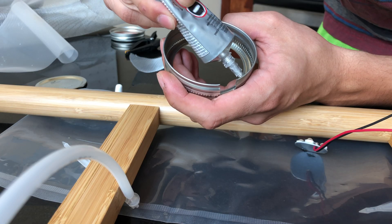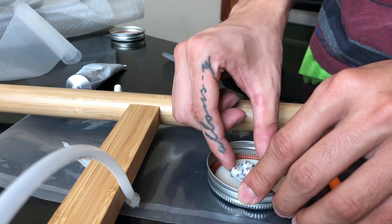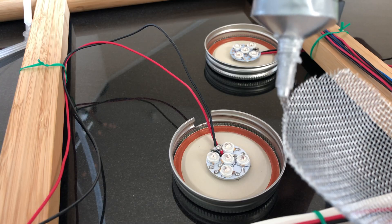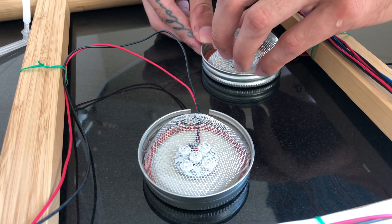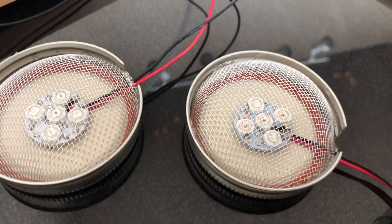While that dries let's make some housings for the grow lights. I'm just going to be using some mason jar lids. I cut these two circular pieces out of screen I picked up from a local hardware store. Just like that we have our housings.